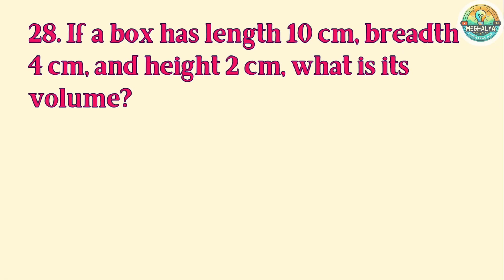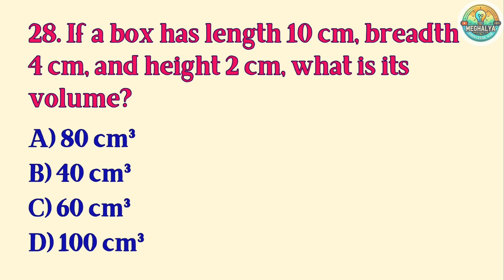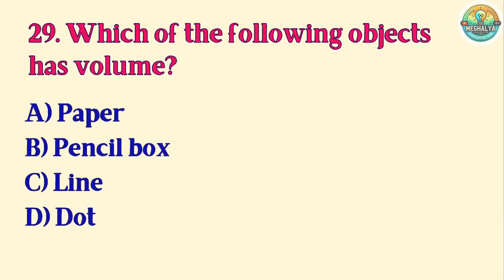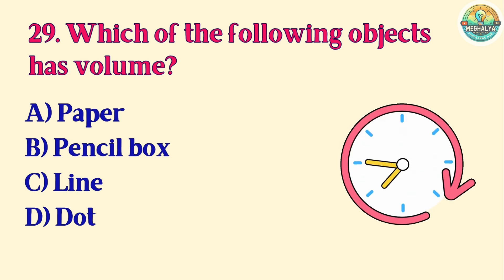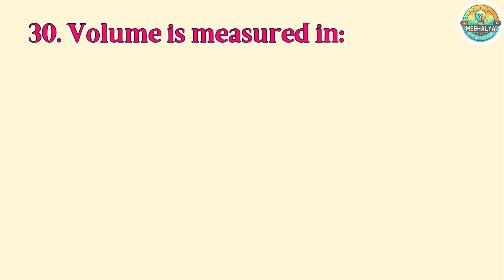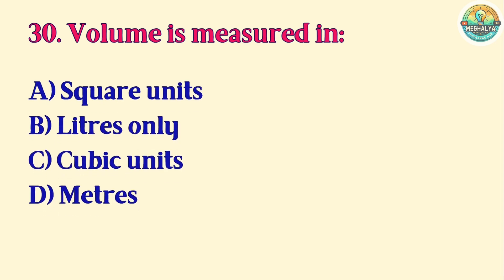Question 28. If a box has length 10 cm, breadth 4 cm, and height 2 cm, what is its volume? A. 80 cm³. B. 40 cm³. C. 60 cm³. D. 100 cm³. Answer is A. 80 cm³. Question 29. Which of the following objects has volume? A. Paper. B. Pencil box. C. Line. D. Dot. Correct answer is B. Pencil box. Question 30. Volume is measured in: A. Square units. B. Liters only. C. Cubic units. D. Meters. Correct answer is C. Cubic units.